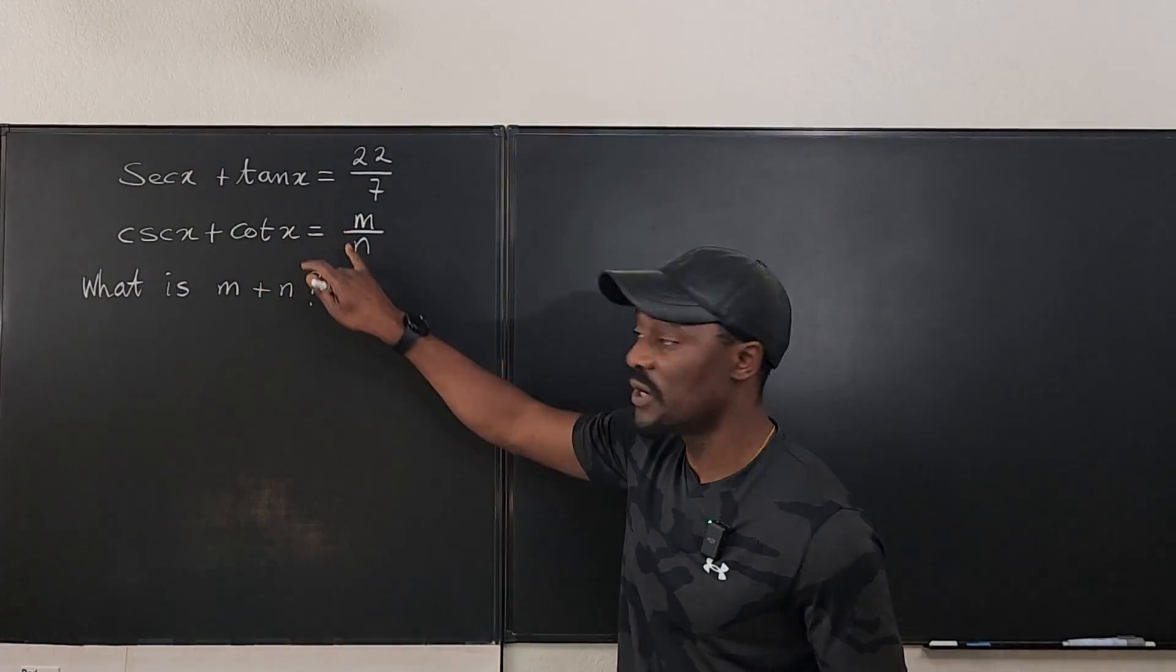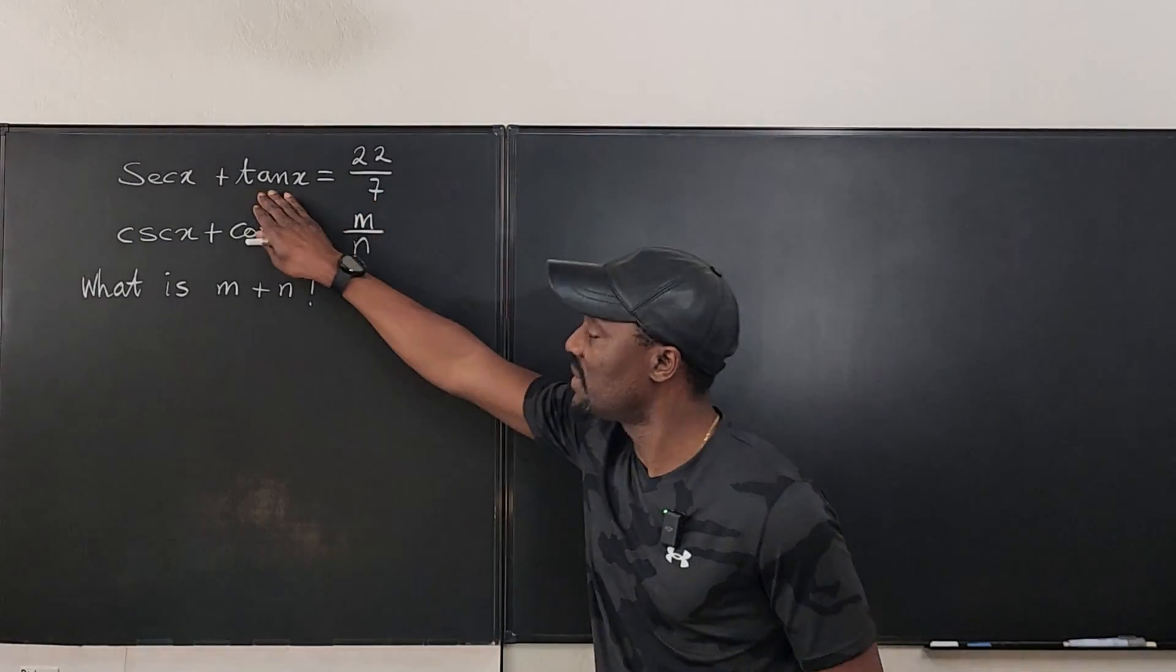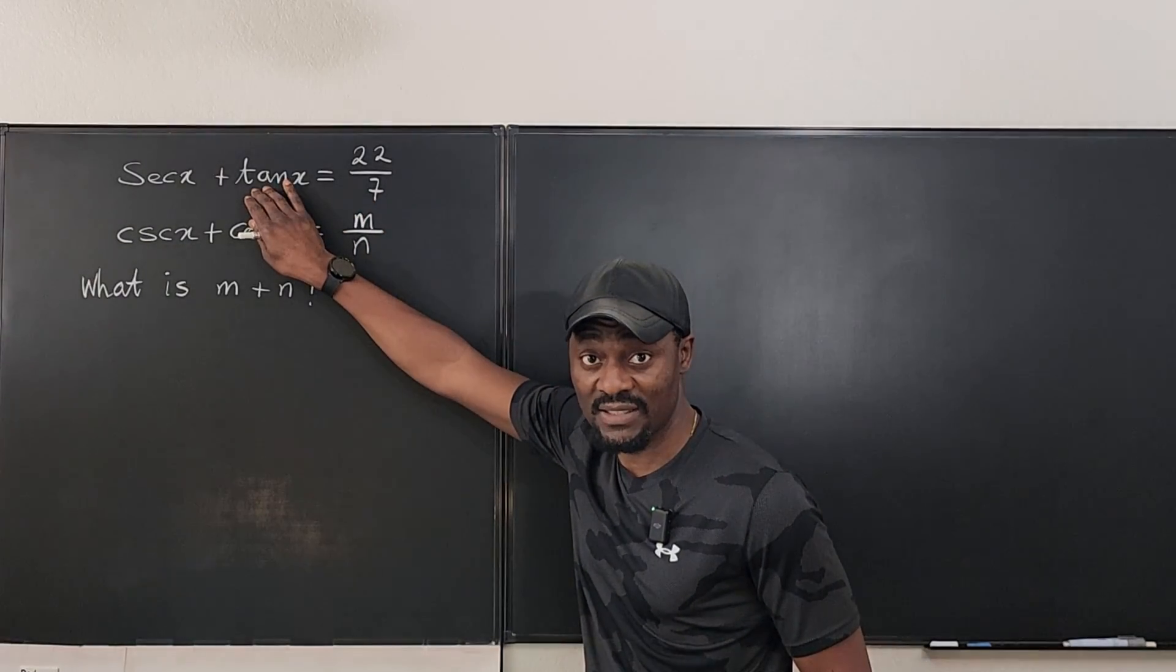We don't know x, we don't know m, we don't know n. But with the trig identity I mentioned, we might be able to generate something for secant x plus tan x. So watch this.